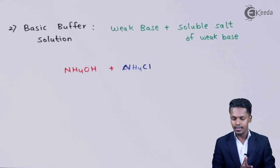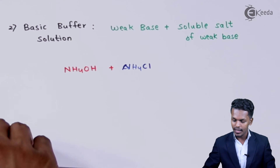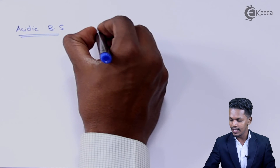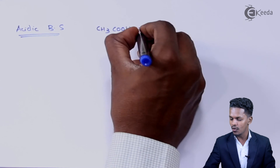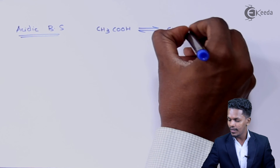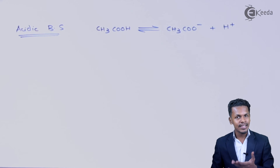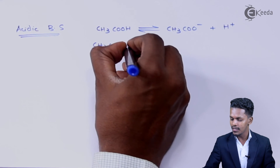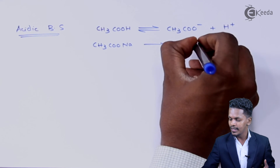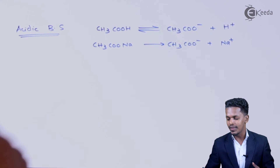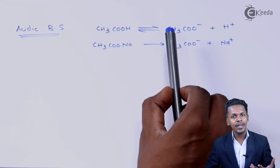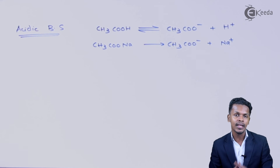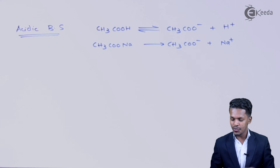Let me give a short synopsis of what we have covered. For the acidic buffer solution, we take a weak acid — CH3COOH — which being a weak acid won't dissociate completely and will only partially dissociate. The soluble salt of acetic acid is sodium acetate, which completely dissociates into an acetate ion and a Na⁺ ion. This combination of a weak acid and its soluble salt helps in preventing the change in pH.